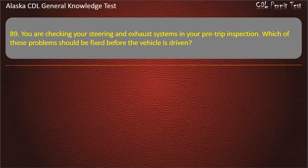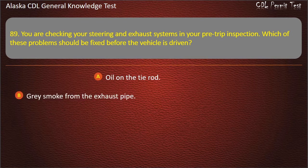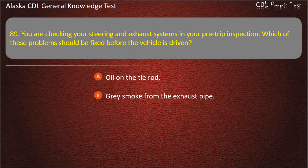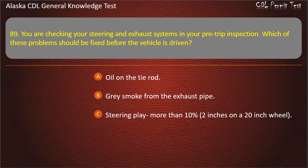Question 89. You are checking your steering and exhaust systems in your pre-trip inspection. Which of these problems should be fixed before the vehicle is driven? Oil on the tie rod, gray smoke from the exhaust pipe, or steering play more than 10% — 2 inches on a 20-inch wheel. Answer: Steering play more than 10%, 2 inches on a 20-inch wheel.